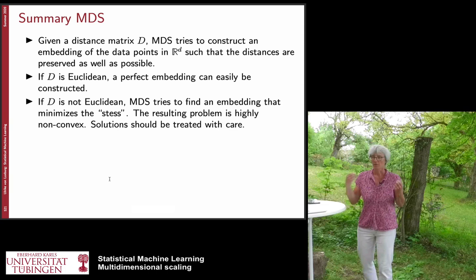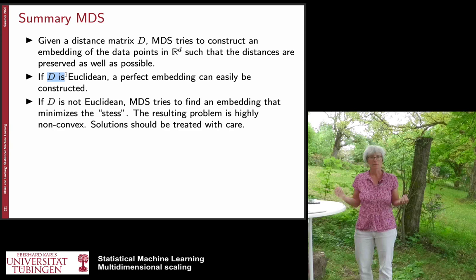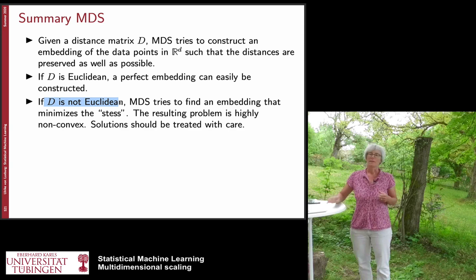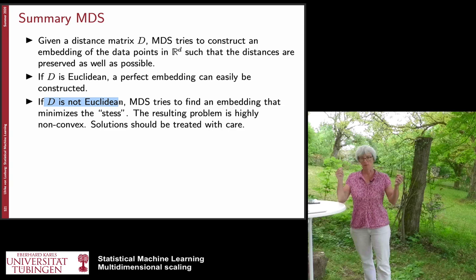To summarize: multidimensional scaling takes a distance matrix and tries to find an embedding of data points into R^d such that distances are preserved as well as possible. If the original distance matrix is Euclidean, you can realize a perfect embedding. Typically D is not Euclidean, and you try to find an embedding with as little error as possible. This leads to a non-convex problem that can be problematic due to either approximation errors from non-Euclidean data, or because you simply don't find a good local optimum of the objective function you are optimizing.